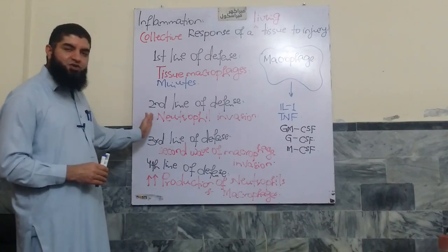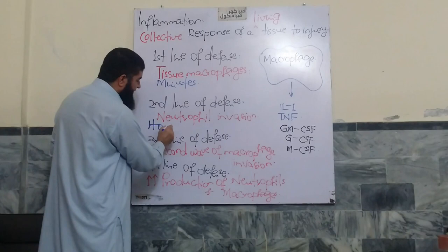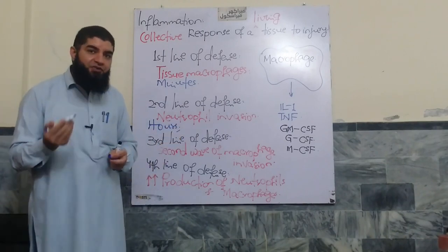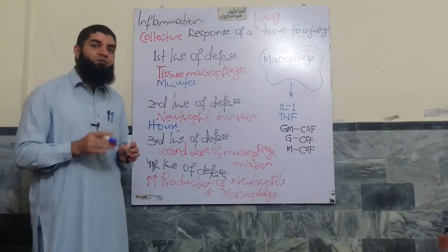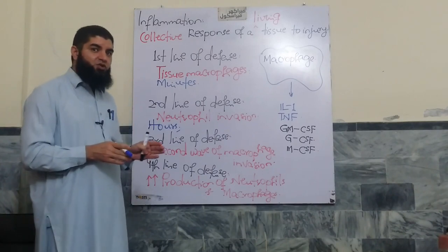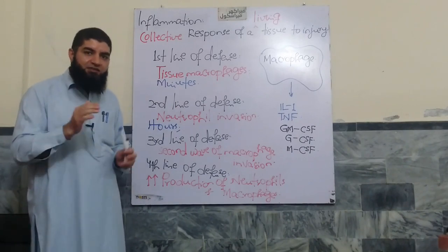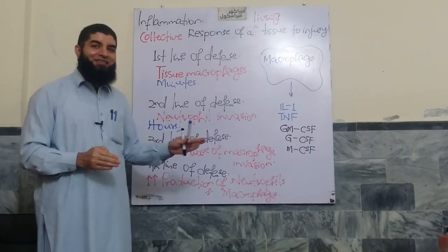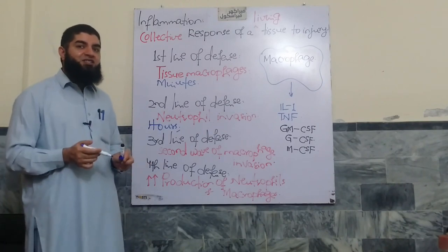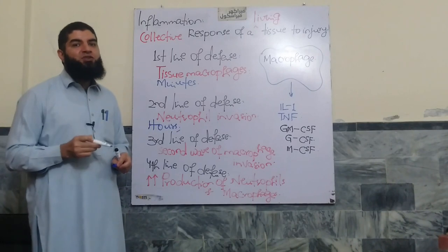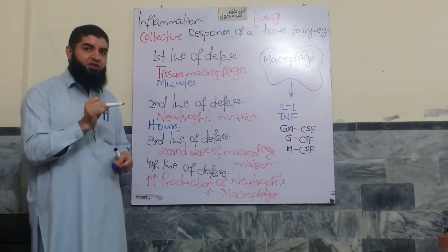The second line of defense is constituted by the invasion of neutrophils, and that is just a matter of hours. Within as soon as one hour after injury, neutrophils are mobilized to the injured tissue. Neutrophils are the most abundant white blood cells in circulation, so it takes very little time for them to reach the injured tissue. Within a few hours there is significant buildup of neutrophils in the injured tissue — if the normal total leukocyte count is 4,000 to 11,000, within a few hours more and more neutrophils are mobilized.